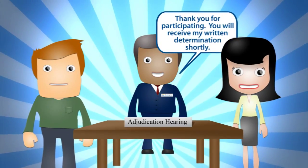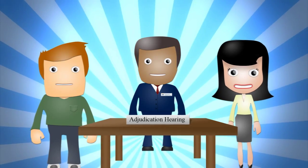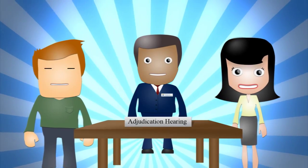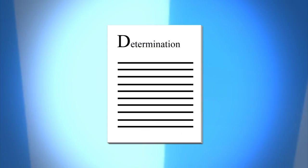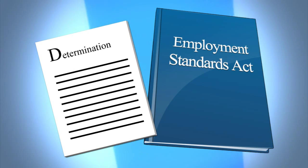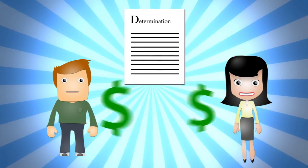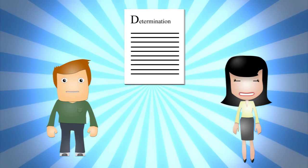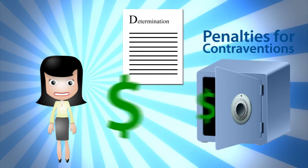Thank you for participating. You will receive my written determination shortly. Once the employer and the employee have provided all of their information, the Employment Standards Branch will issue a written decision called a determination. A determination will state whether or not the Employment Standards Act has been contravened. If wages are owed, the determination will order the employer to pay them to the employee. If contraventions are found, the employer will be ordered to pay the mandatory penalties.